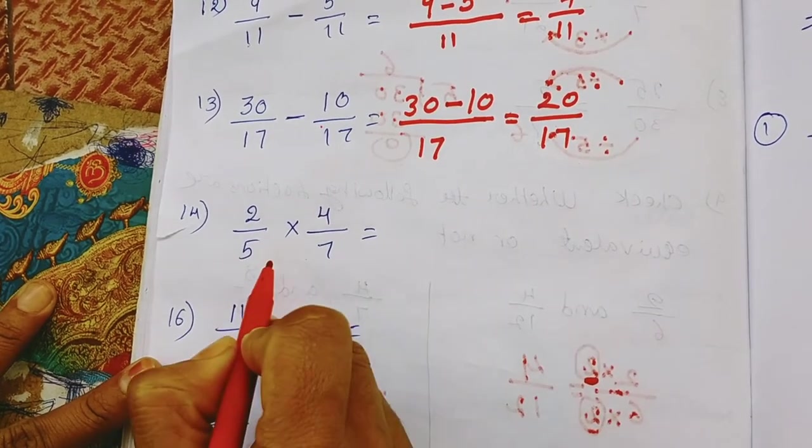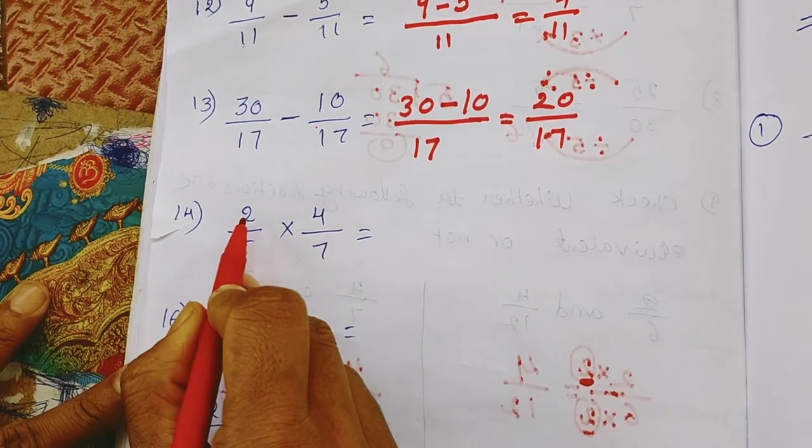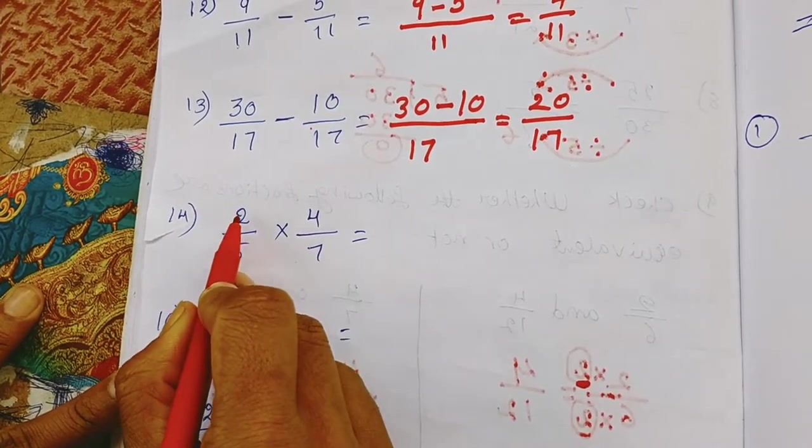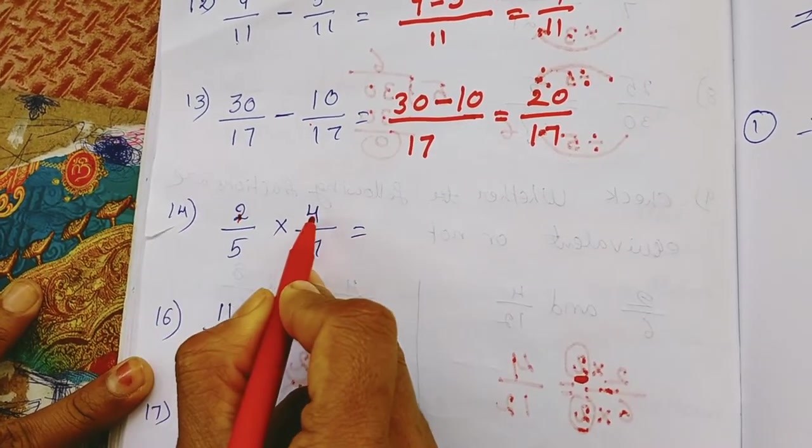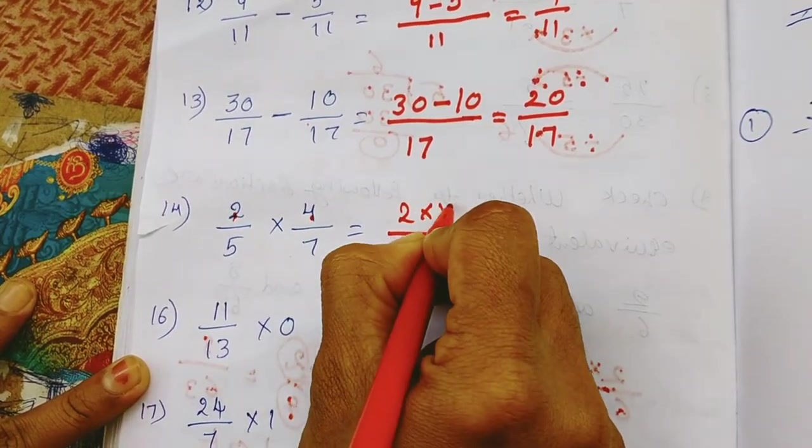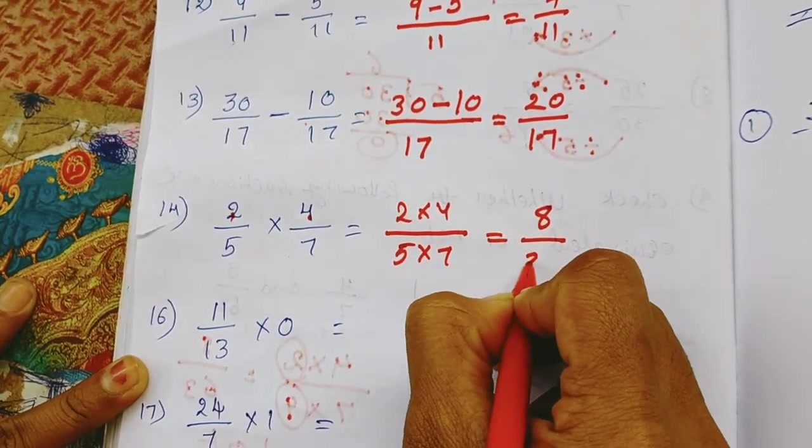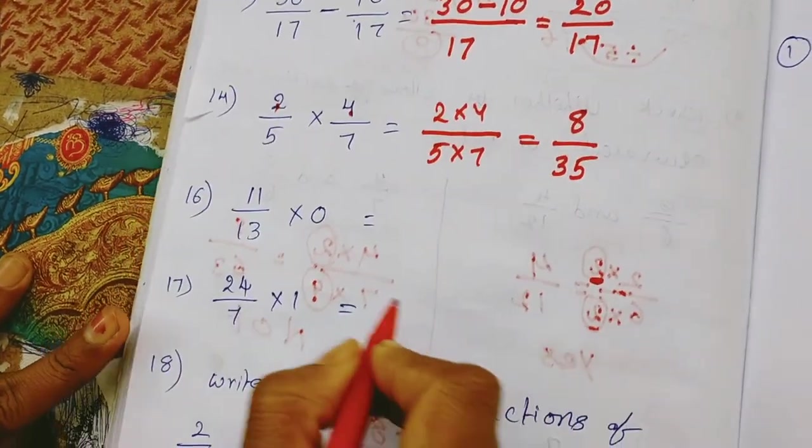Next is the multiplication in fractions. In this multiplication we multiply numerator with numerator, denominator with denominator. So that means 2 into 4 and 5 into 7. So 2 times 4 are 8, 5 times 7 are 35.